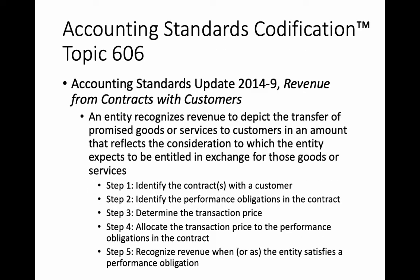The other significant occurrence in the accounting world was FASB's issuance of ASU 2014-09, Revenue from Contracts with Customers — the culmination of a joint project between FASB and the IASB — which resulted in a very significant change in how revenue is accounted for by entities that follow FASB standards.